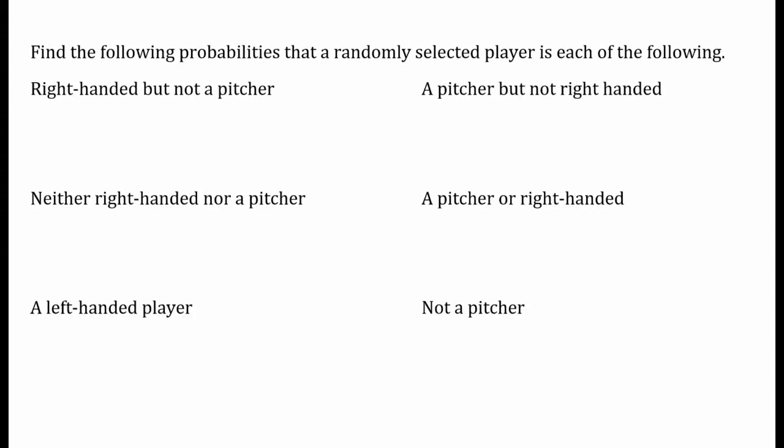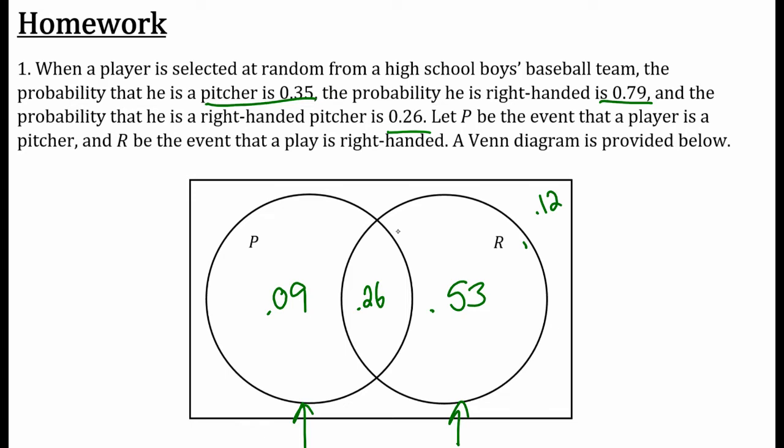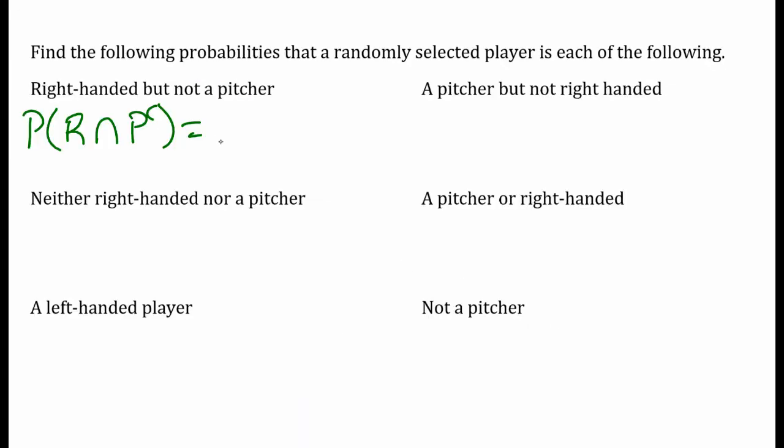Find the following probabilities that a randomly selected player is each of the following. So what's the probability that I get right-handed but not a pitcher? So AND not a pitcher, the complement of pitcher. Right-handed but not a pitcher, what does that come out to be? Right-handed but I don't want to include the pitchers. That's 53%, 0.53.